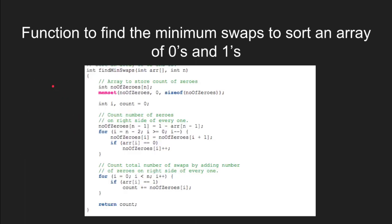Here is the implementation of the given problem in C. We create an array for the number of zeros and set the value as 1 minus the value at the last index. Then we keep iterating back and incrementing the value at the ith index for number of zeros if the value in the array is 0. This gives us the array of number of zeros on the right-hand side of every one.